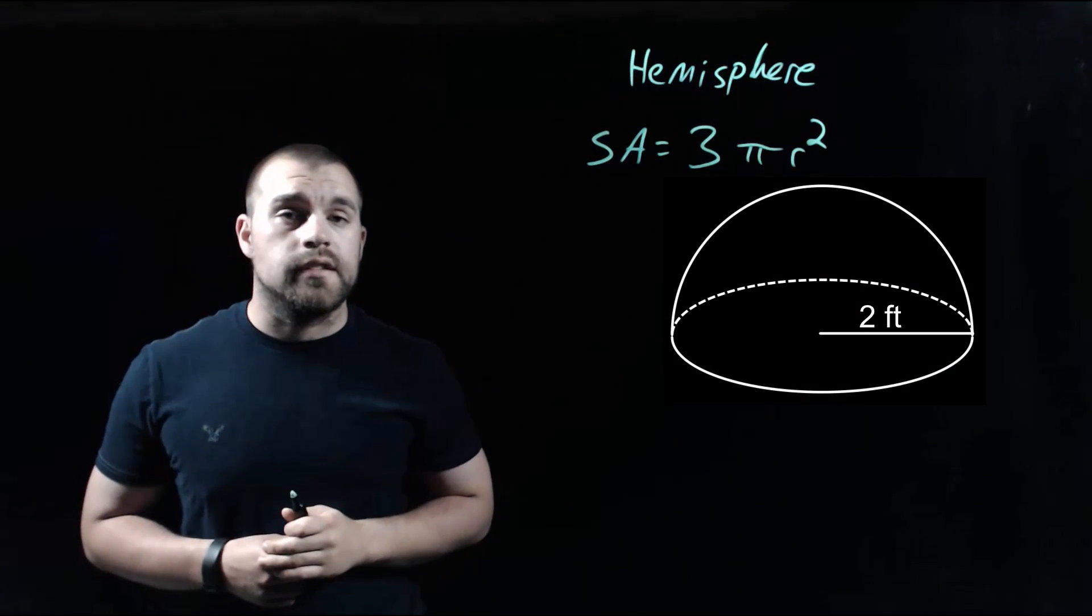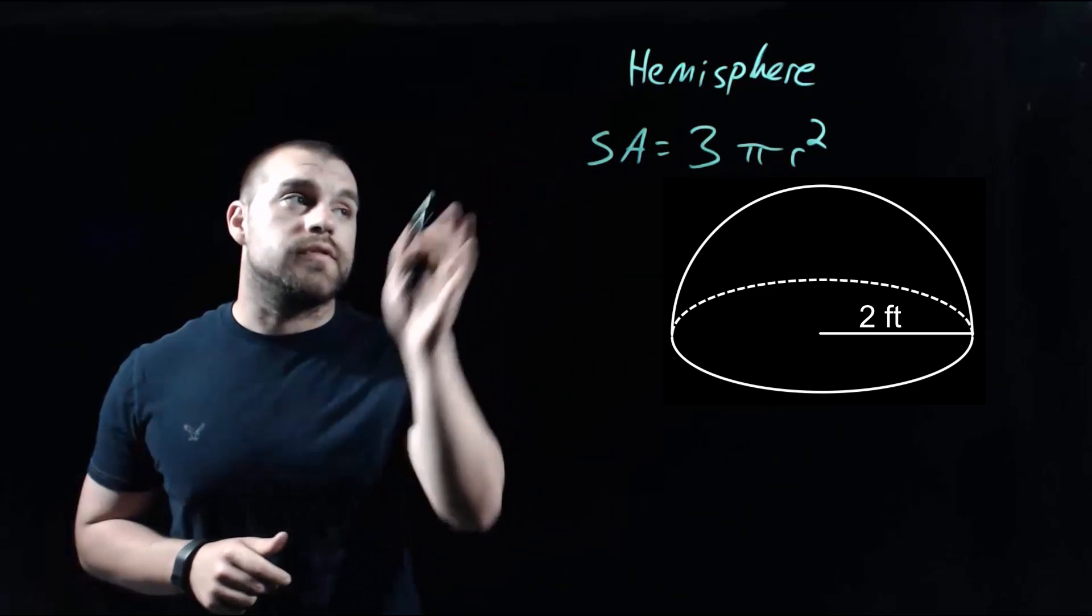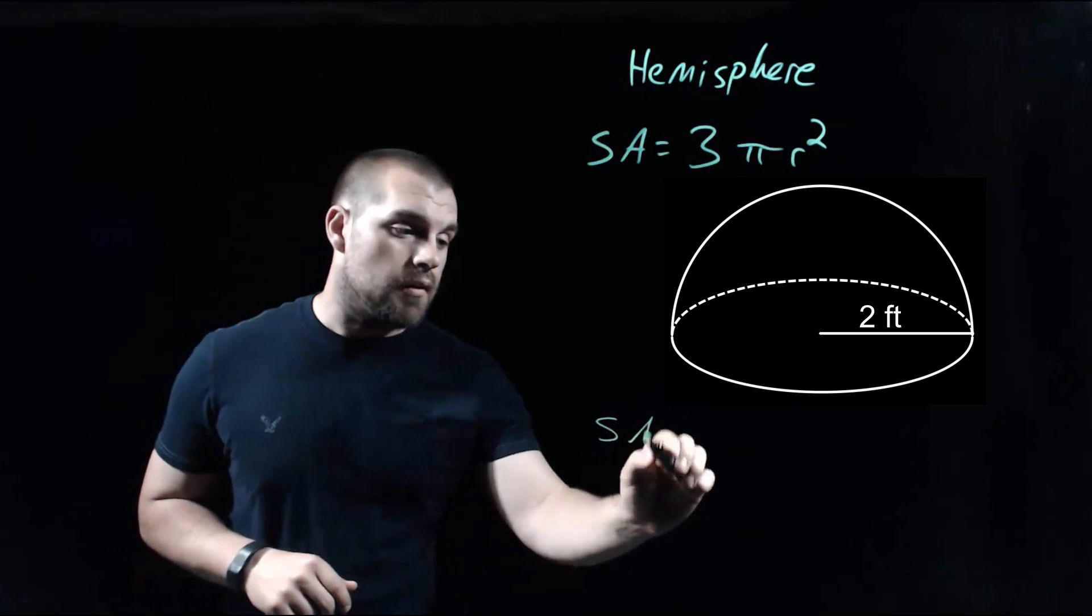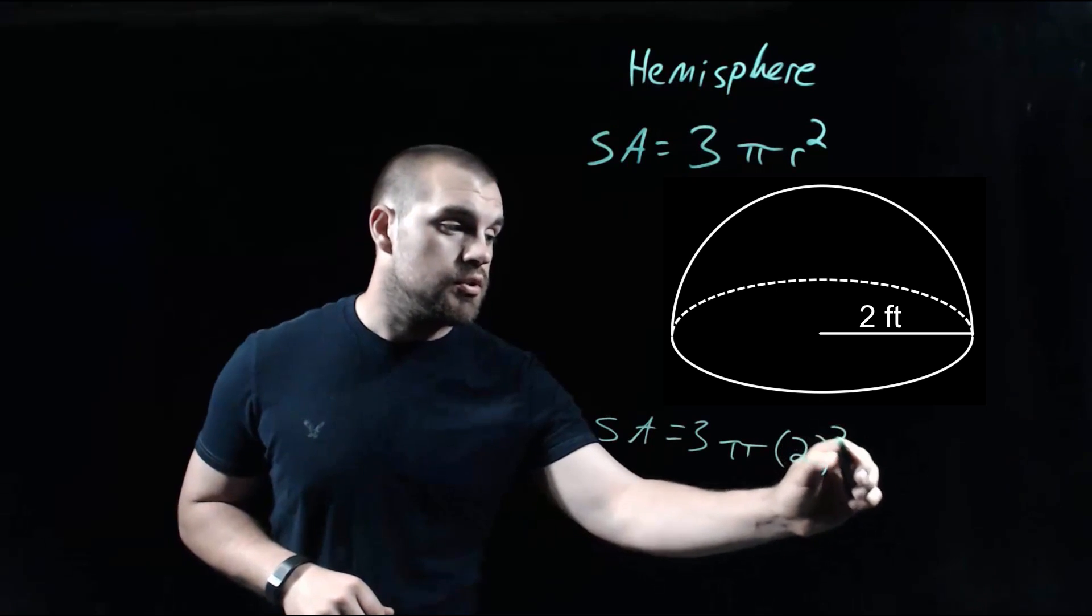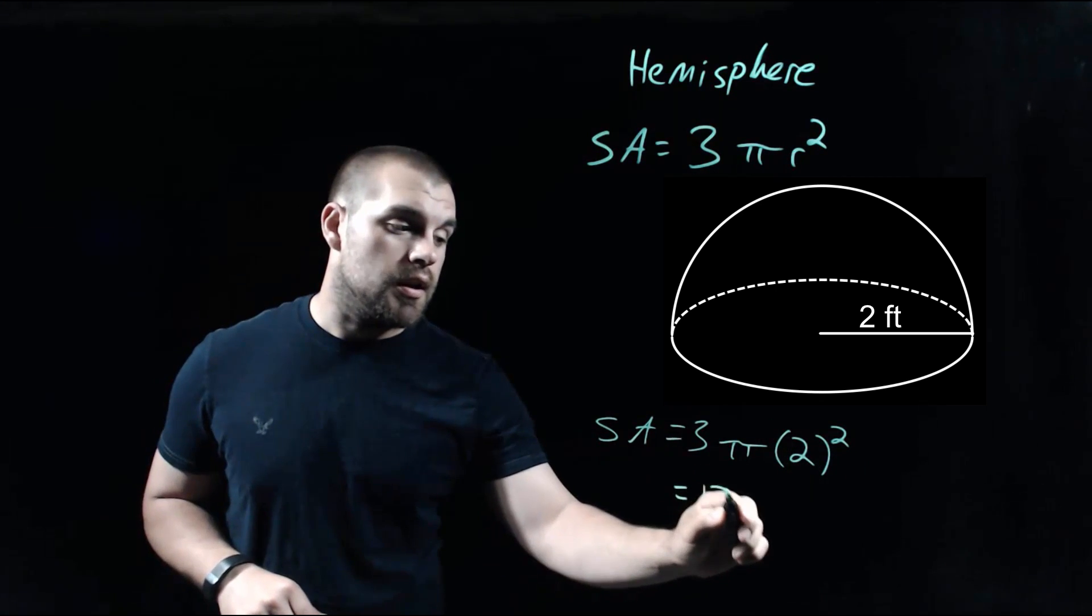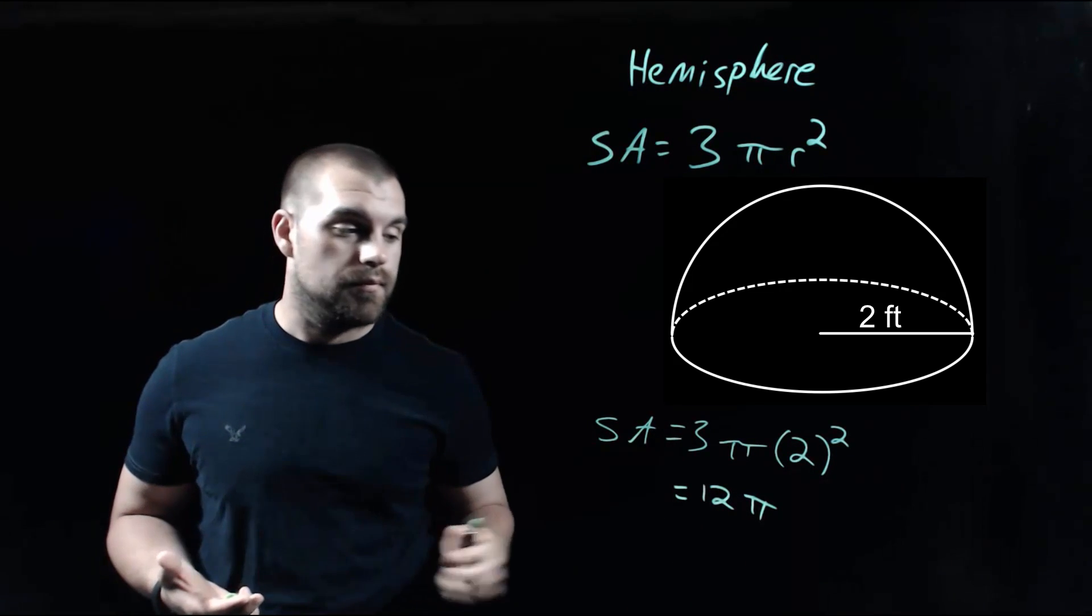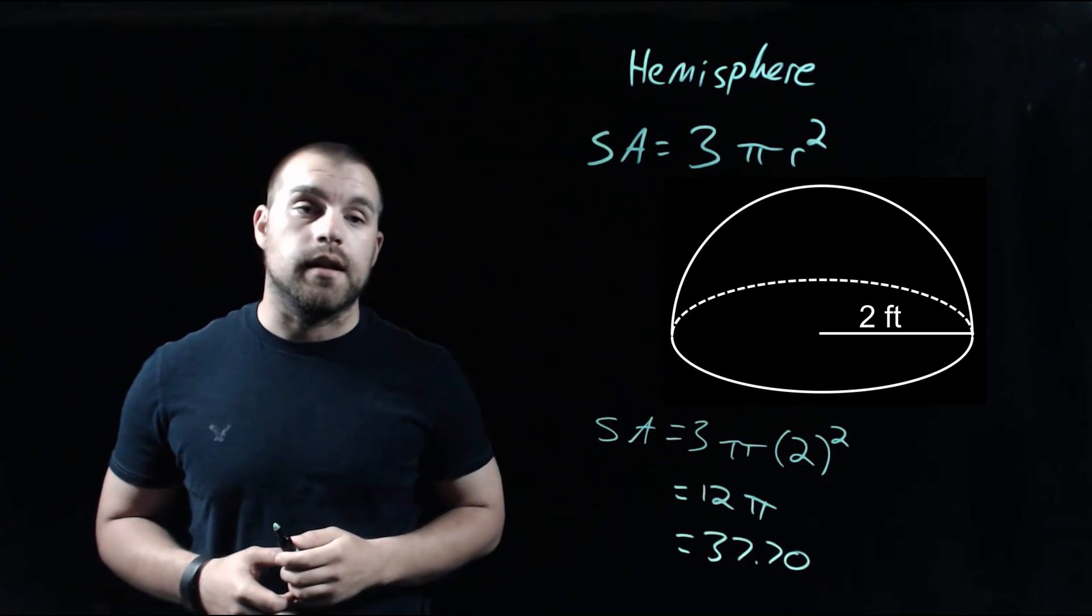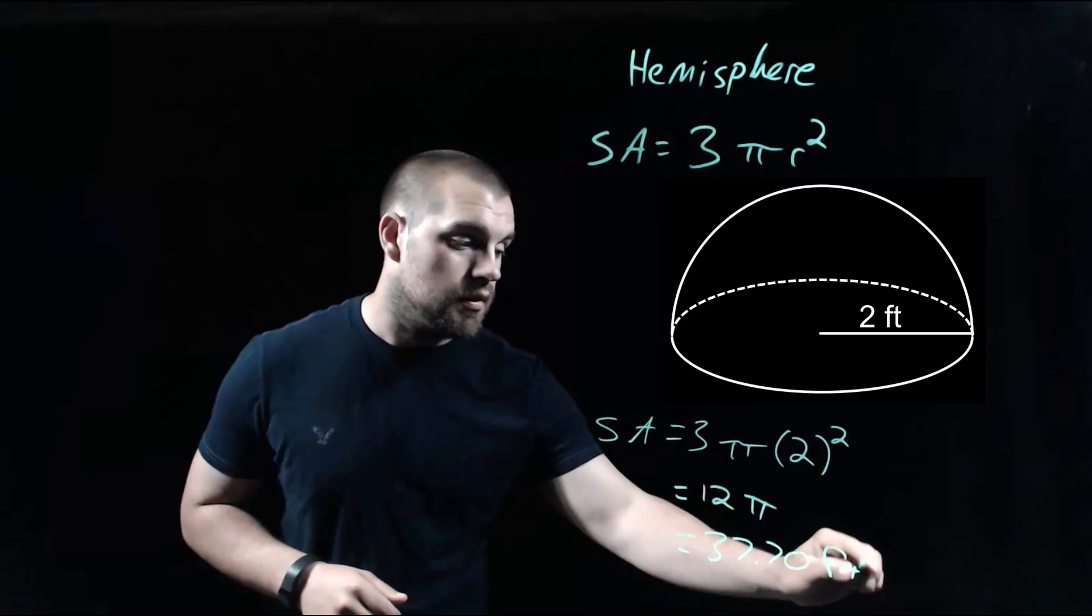As we take a look at this last example, here we've got a hemisphere with a radius of 2 feet. Our surface area formula says 3πr². So we do 3 × π × 2². 2² is 4, and 4 × 3 is 12π. Taking 12 × π, we end up getting 37.70 feet squared as our final answer.